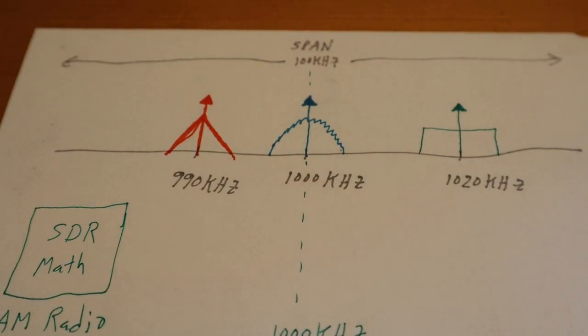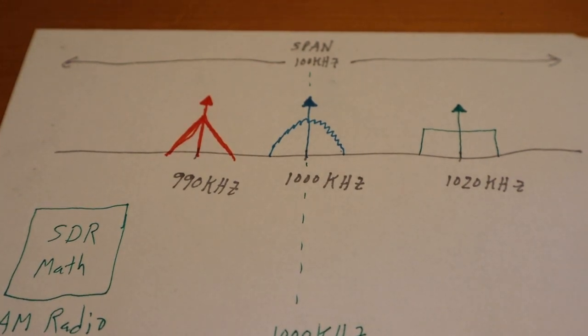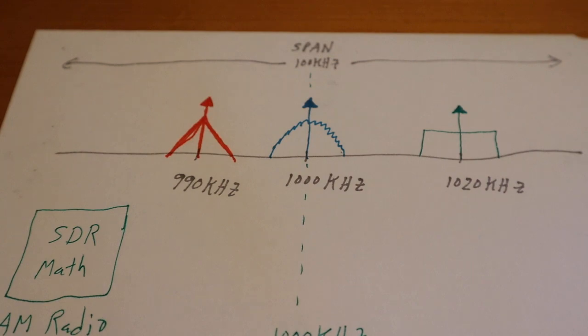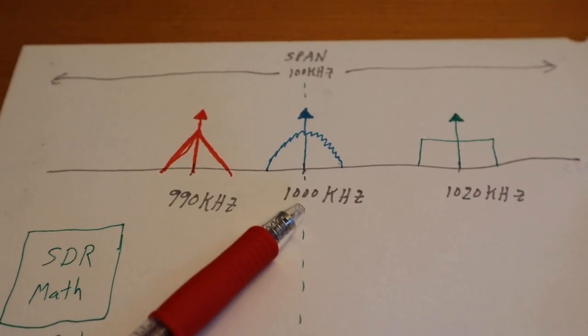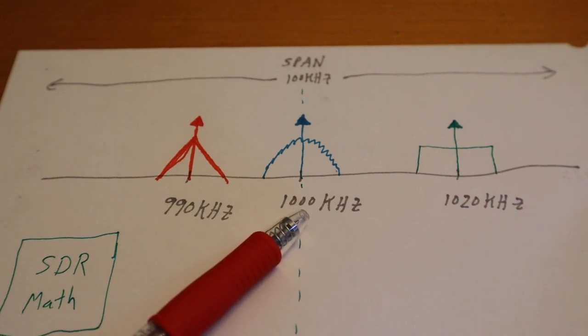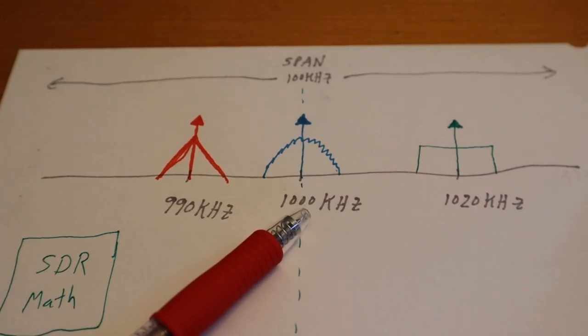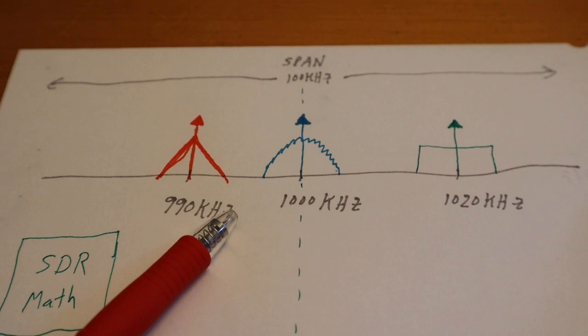As usual, we'll start off with an example. Let's say we got three radio stations here. You tuned your SDR radio to 1000 kilohertz, and we got about a 100 kilohertz span.